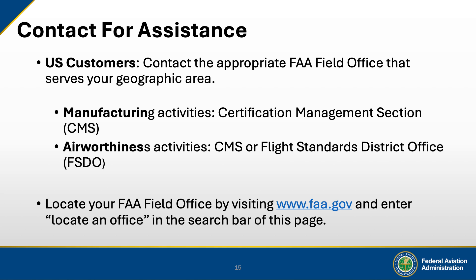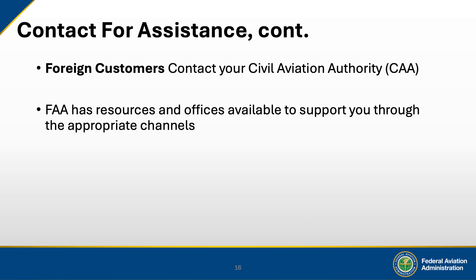For customers in the United States, please contact the FAA field office that serves your geographic area. For manufacturing, contact an Aircraft Certification Service Certification Management section. For airworthiness, contact an Aircraft Certification Service Certificate Management section or a Flight Standards District office. To find your FAA field office, visit www.faa.gov and use the search window to locate an office. If you are located outside of the United States, please contact your country's Civil Aviation Authority for assistance.